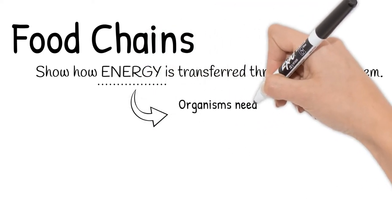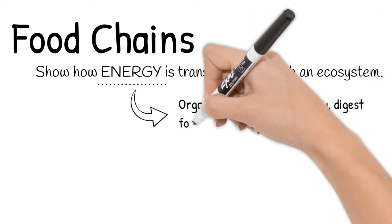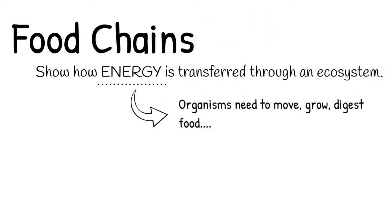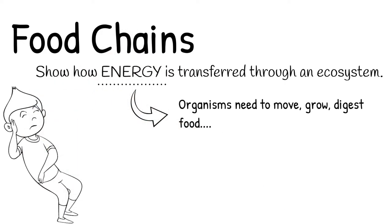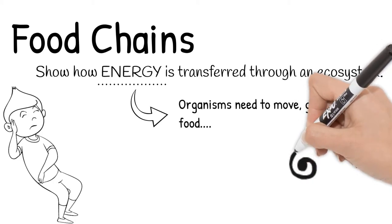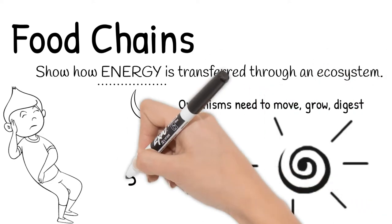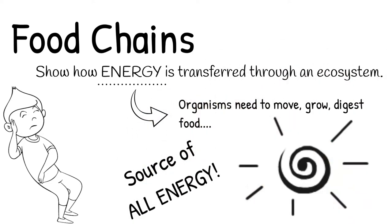Energy is needed for organisms to move, grow, digest food, and so on. Ever notice when you're hungry your body is just a lot slower in functioning? You are low in energy. The path of energy flow through an ecosystem always starts with the sun. It is the source of all energy.